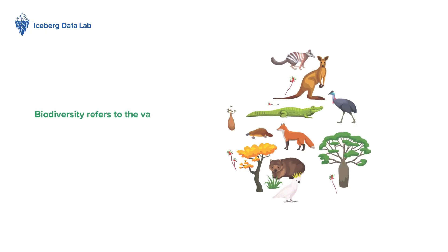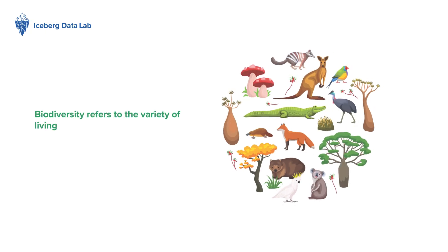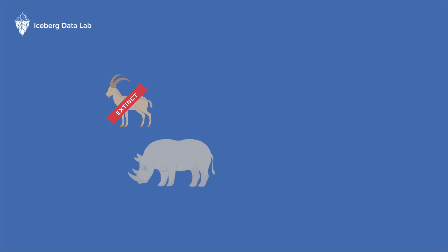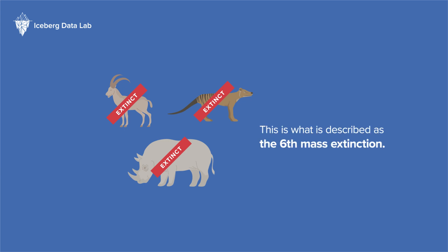Biodiversity refers to the variety of living organisms on Earth, including plants, animals, bacteria, and fungi. Due to increasing harmful human activities in recent years, many species are being threatened with extinction, putting the Earth's natural diversity at risk. This is what is described as the sixth mass extinction.